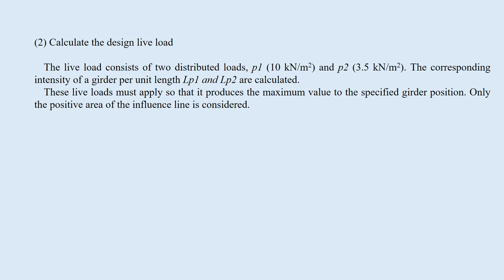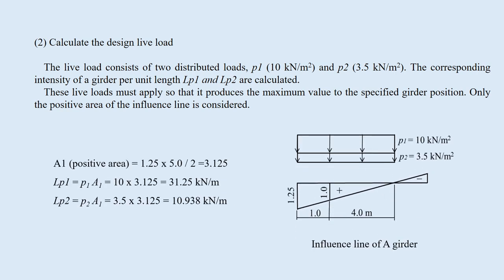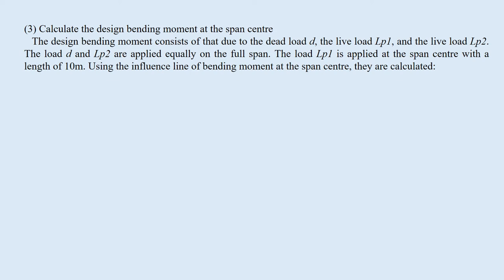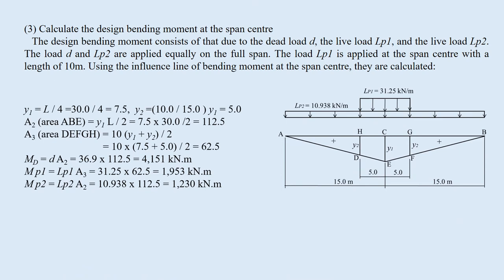These live loads must be applied so that they produce the maximum value at the specified girder position. Only the positive area of the influence line is considered. Next, calculate the design bending moment at the span center. The design bending moments are caused by the dead load D, the live load LP1, and the live load LP2. The loads D and LP2 are applied equally on the full span. The load LP1 is applied at the span center with a length of 10 meters. Using the influence line of bending moment at the span center, Y1, Y2, area ABE, and area DEFGH can be obtained.